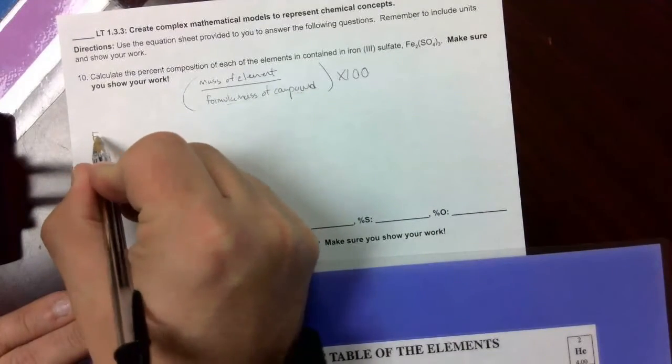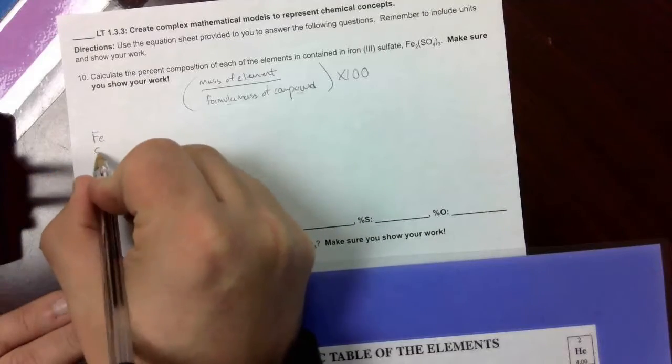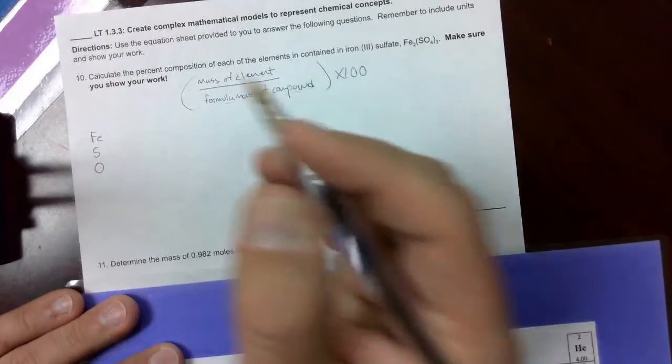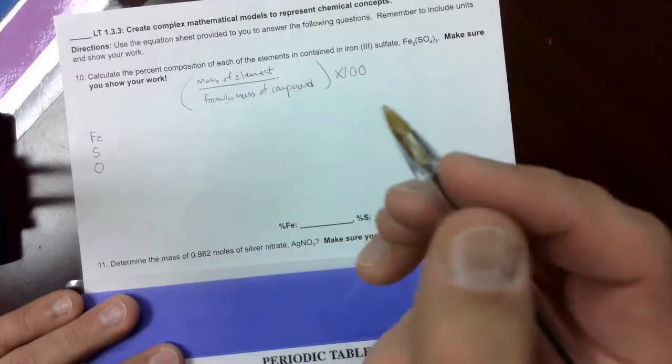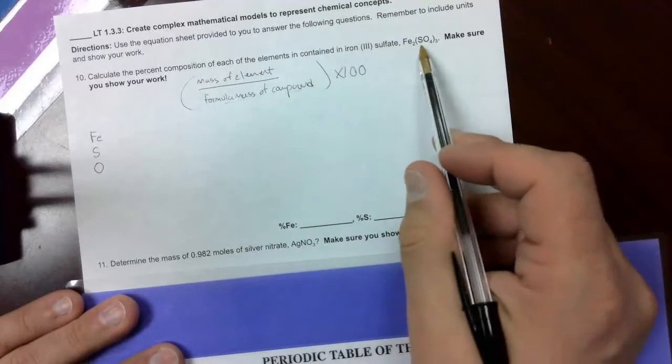We'll list those elements. Iron is Fe, sulfur is S, and O for oxygen. Right? Three different capital letters, three different elements.